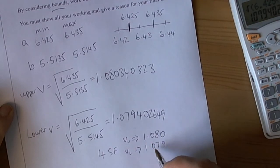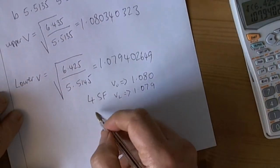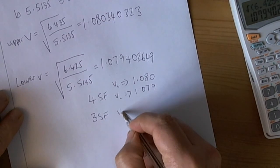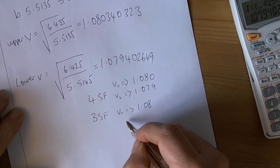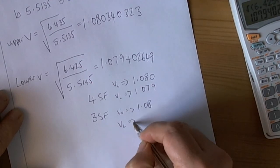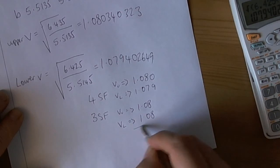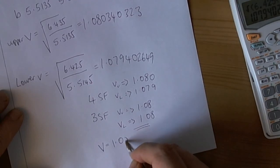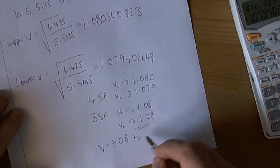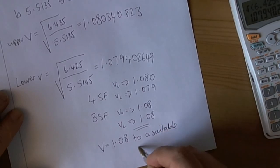So if we now look at what happens when we do three significant figures, then the upper V becomes 1.08 and also the lower V becomes 1.08. These values now agree with each other, so the final answer should be V equals 1.08 to a suitable degree of accuracy.